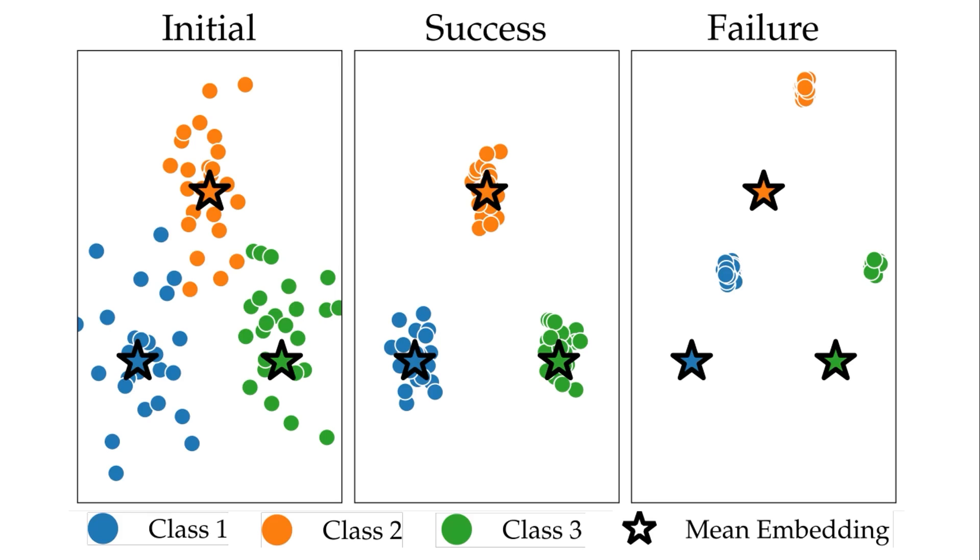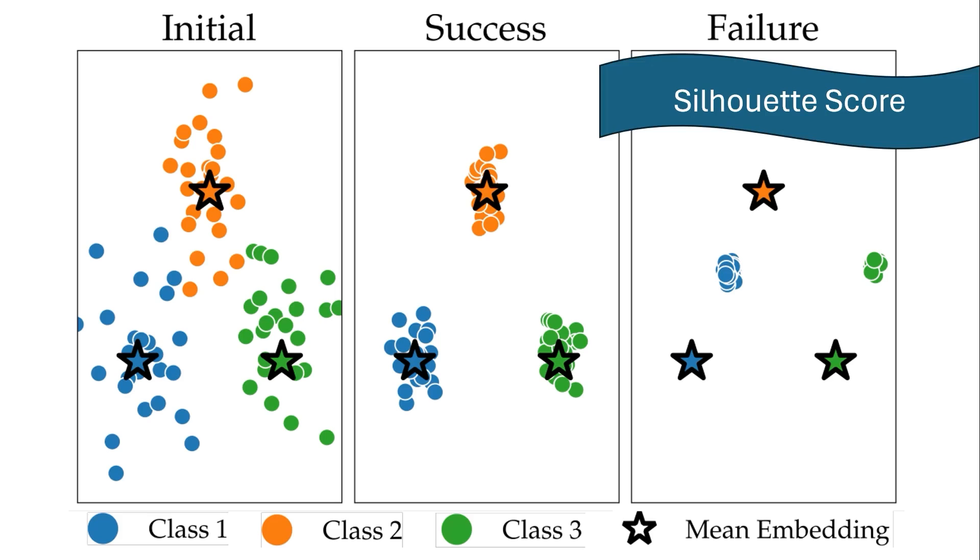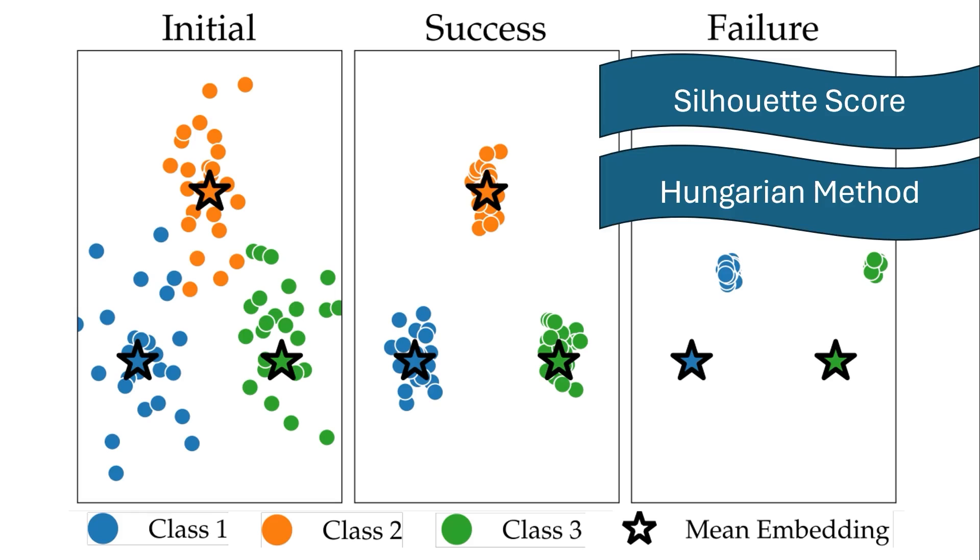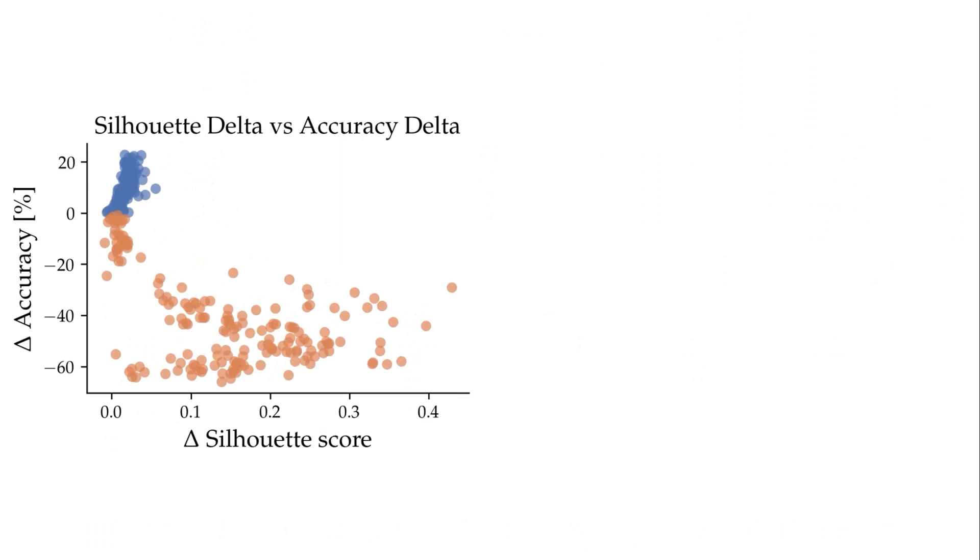And to quantitatively measure this failure, they use silhouette score to determine how good the cluster quality is. It essentially gives us a value between 0 and 1, and as it is more close to 1, we have better clusters that each entry is close to its own cluster and far away from the rest. And the other thing that they measured is Hungarian method, that this shows how away the cluster is from the mean embedding of the training data.